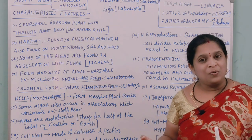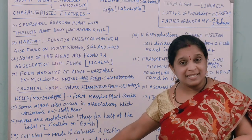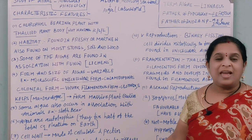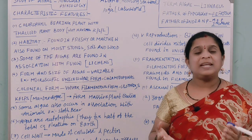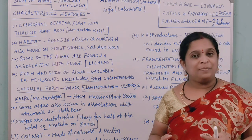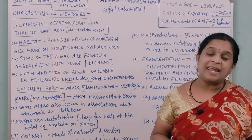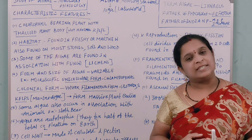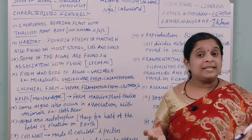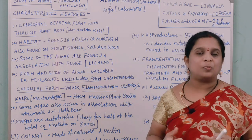Because there is no differentiation of roots, stem, or leaves, we can say the vascular tissue is absent. Vascular tissue is a complex tissue made up of xylem and phloem. Xylem helps in the conduction of water from roots to all parts of the body, and phloem helps in the conduction of food material from the leaves to all parts of the body. That is why vascular tissue is called a complex tissue.